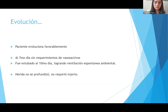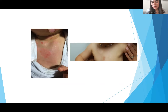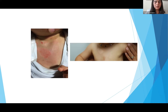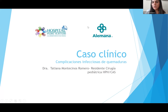Afortunadamente, este paciente tuvo una buena evolución. Al séptimo día ya no tenía requerimientos de vasoactivos, fue extubado al décimo día logrando ventilación espontánea, y la quemadura no se profundizó ni requirió injertos. Finalmente vemos la foto de evolución: la quemadura está totalmente epidermizada, y con meses de evolución se observa cómo quedó la cicatriz. No hay enemigos pequeños: una simple quemadura pequeña puede terminar con el paciente en UCI intubado con drogas vasoactivas.